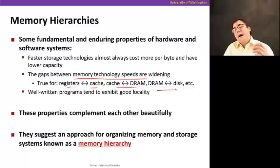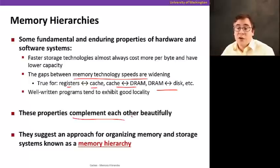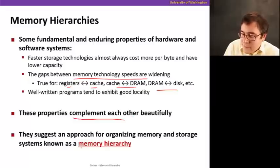And if well-written programs exhibit locality, that suggests that you can actually build progressively larger and slower memory hierarchies and still give the illusion from the processor point of view that the memory is most of the time pretty fast. So, these properties really complement each other beautifully to form a large pool of memory that behaves as if you were very, very fast, even though it's composed to a large extent by slow large memory. So, they really suggest organizing them in the form of a hierarchy.